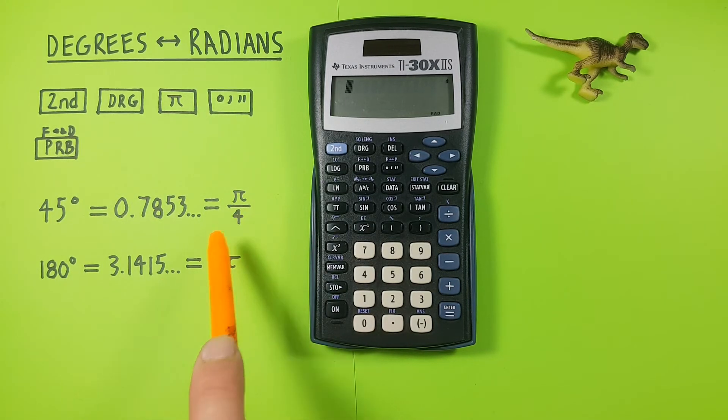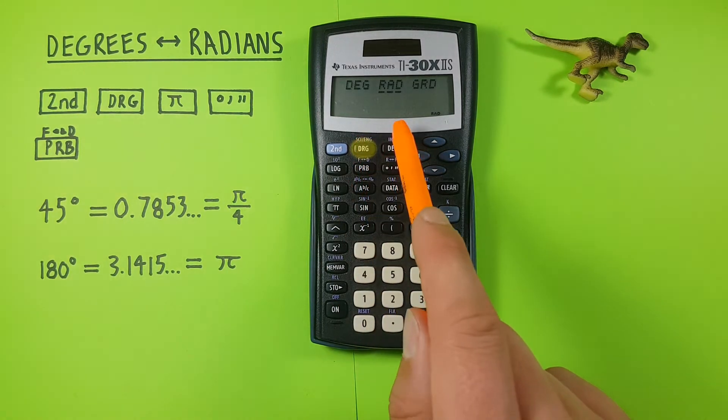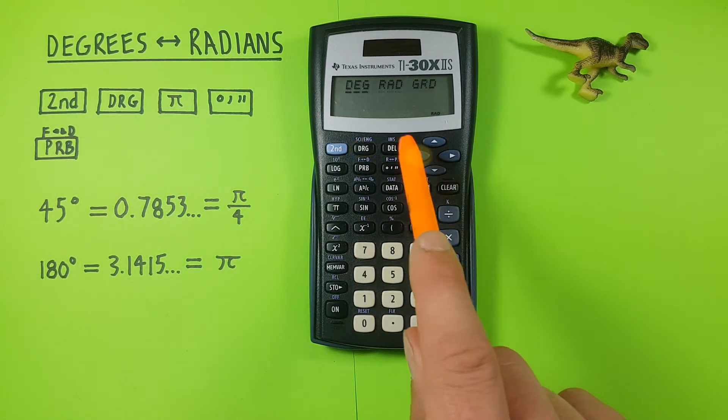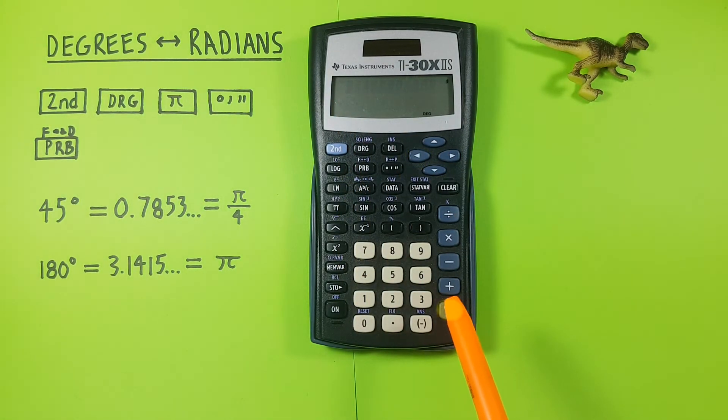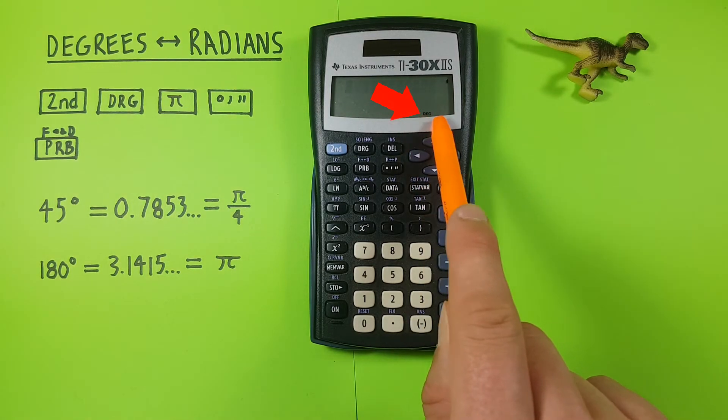So for this time we want to get this in degrees, so we go DRG key, scroll over to the DEG for degrees, press enter, and we should now see a DEG at the bottom of our screen letting us know we're in degrees mode.